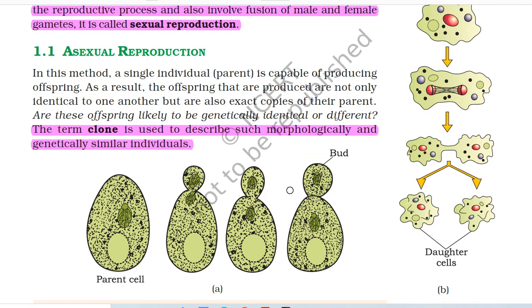In asexual reproduction, a single individual, i.e. parent, is capable of producing offspring. As a result, the offspring produced are not only identical to one another, but are also exact copies of the parent. Are these offspring likely to be genetically identical or different?